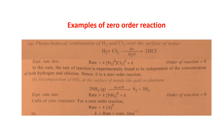Examples of zero order reactions: (1) The photochemical combination of H₂ and Cl₂ over the surface of water: H₂ + Cl₂ → 2HCl. The experimentally determined rate law is: rate = K[H₂]^0[Cl₂]^0 = K. The overall order of reaction is zero. The rate of reaction is experimentally found to be independent of the concentration of both hydrogen and chlorine — hence it is a zero order reaction. (2) Decomposition of NH₃ at the surface of a metal catalyst like gold or platinum: NH₃ → N₂ + 3H₂. The rate law shows rate = K[NH₃]^0, meaning it does not depend on the concentration of ammonia. This is experimentally found — the order of reaction is zero.